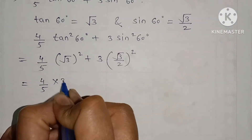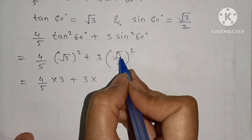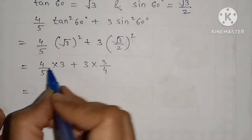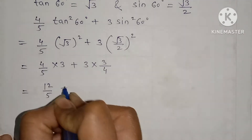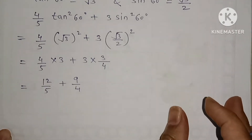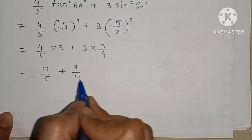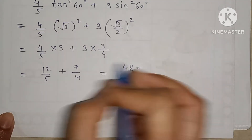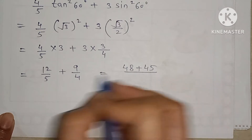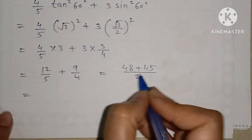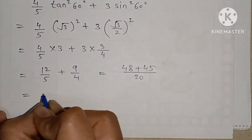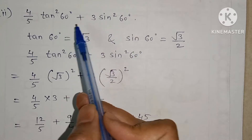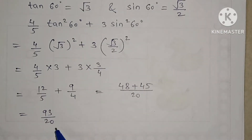Root 3 squared is 3, so 4 upon 5 times 3 gives 12 upon 5. Root 3 upon 2 squared gives 3 upon 4, so 3 times 3 upon 4 gives 9 upon 4. Cross multiplying: 12 fours are 48 plus 5 nines are 45, giving 93 upon 20. Therefore 4 upon 5 tan²60 plus 3 sin²60 equals 93 upon 20.